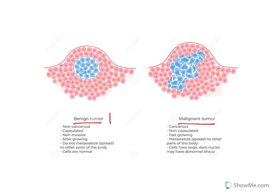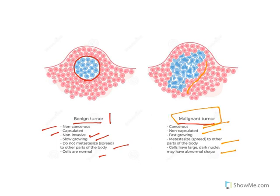There is a difference between benign and malignant tumors. Benign tumors are not cancerous — they are capsulated, meaning the cell growth is surrounded by a capsule. They are non-invasive, will not attack adjacent tissue, grow slowly, and the cells are normal. In contrast, malignant tumors are cancerous, not capsulated, they spread, and the cells are abnormal.